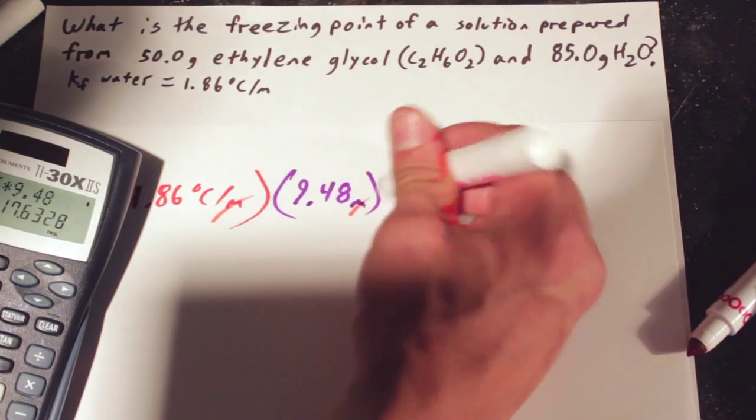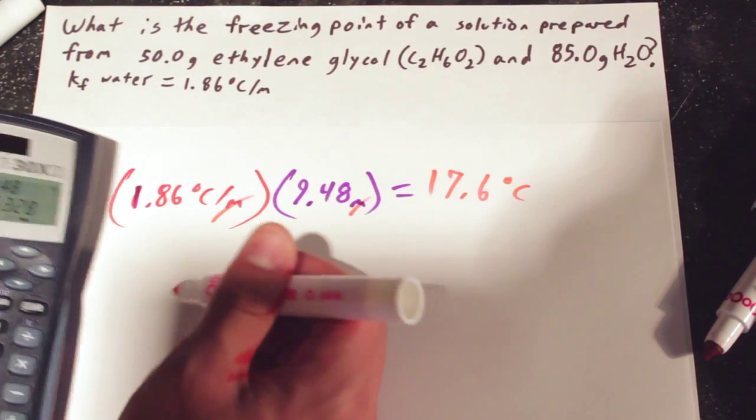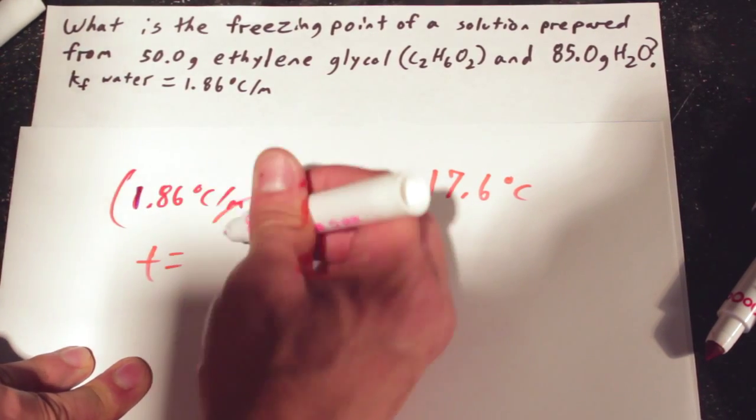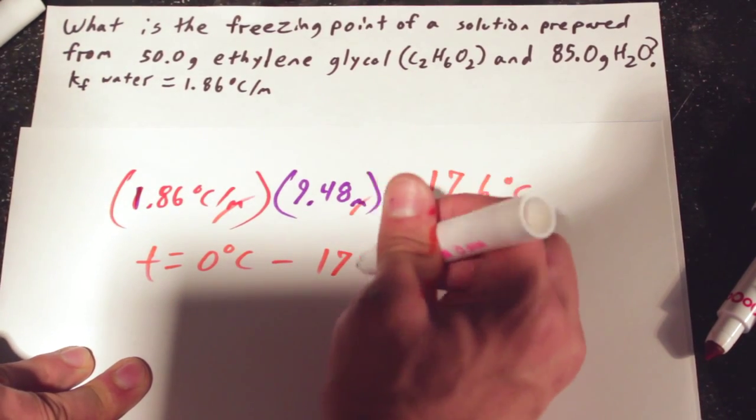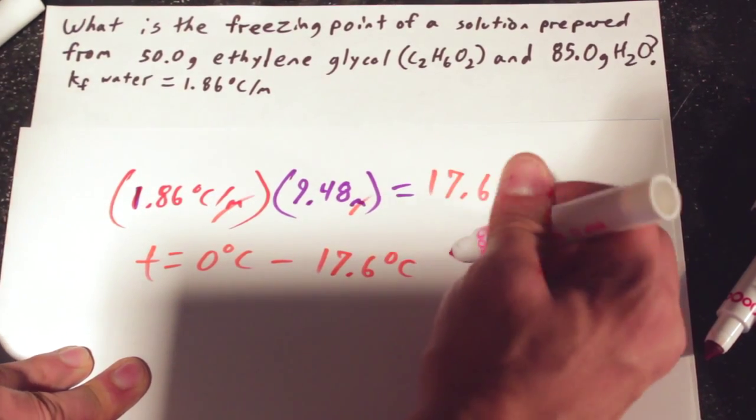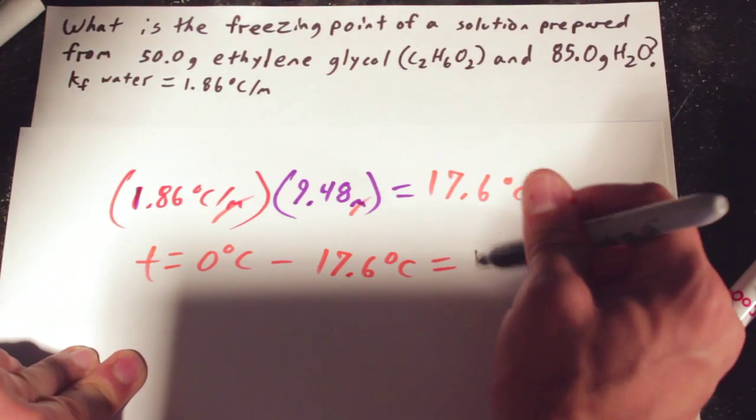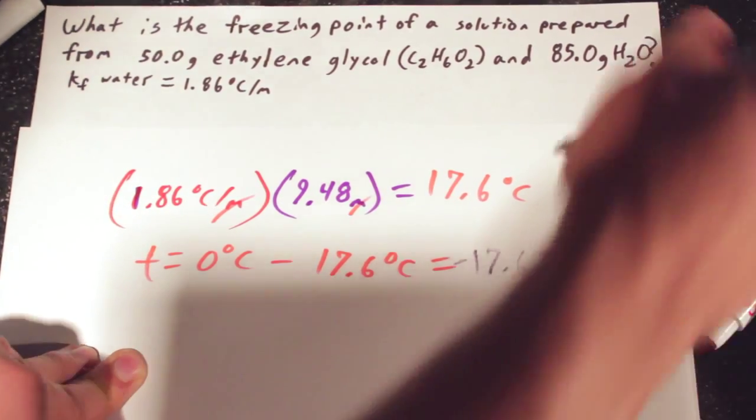That gives us an answer of 17.6. And the mol can cancel out, so we're left with Celsius, degrees Celsius. We're almost done. To find the change in temperature, we're going to set the initial temperature to 0 and subtract 17.6 degrees Celsius. And that will give us an answer of negative 17.6 degrees.